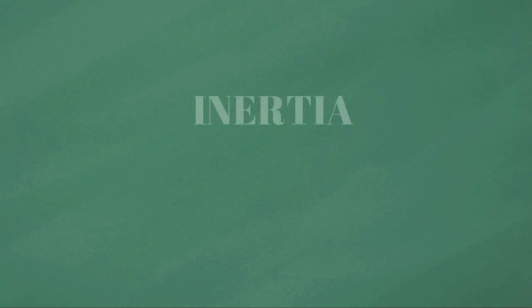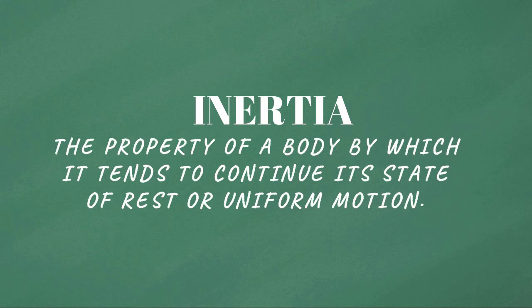So what is inertia? Inertia is the property of a body by which it tends to continue its state of rest or uniform motion. This means that a body with higher inertia will tend to continue its state — if it is at rest, it will try to stay at rest, and if it is in motion, it will try to continue that motion.